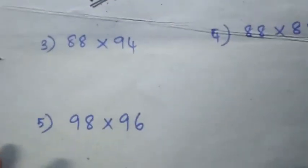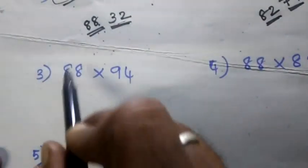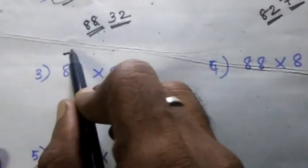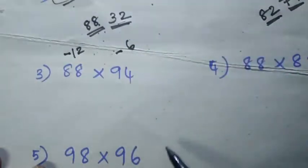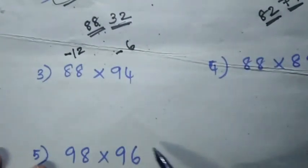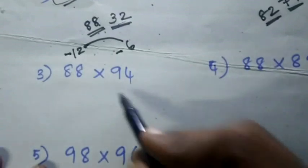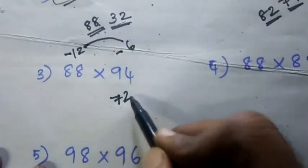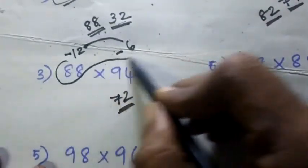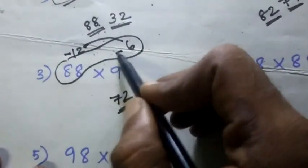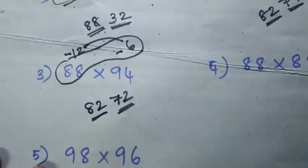Next question. Here the 100 is less — minus 2. Here the 100 is minus 6. So first, multiply: 6 into 2 is 12. Next, cross: 88 minus 6. What do you say? 80, 2.